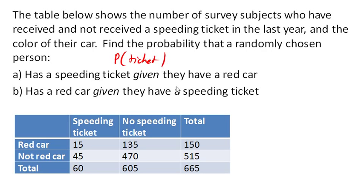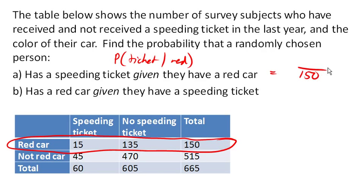So now we're given that they have a red car. So we know right away that we're only talking about these 150 people. So we're only talking about out of these 150 people. Now out of those 150 people with a red car, so we already know that, how many of them got a ticket? Well, 15 of them got a ticket. So that's 15 out of 150, or 1 out of 10, or 10% of people with a red car also had a ticket.